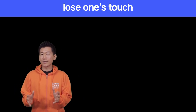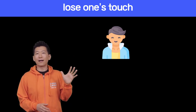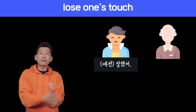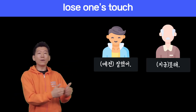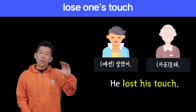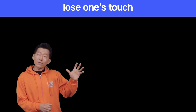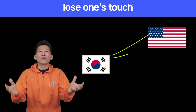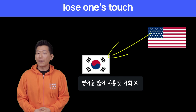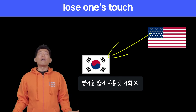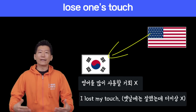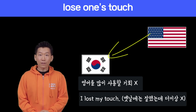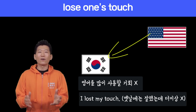이 표현은 이렇게 생각하시면 돼요 — 예전에는 정말 제가 아주 잘했어요. 근데 지금은 그것을 못하는 거예요. 뭐 한동안 practice를 못했겠죠? 미국에서 공부하다가 한국에 돌아왔으면, 영어를 사용할 기회가 많이 없잖아요. 그러면 여러분들은 이렇게 말할 수 있겠죠? 'I've lost my touch.' 영어 실력이 많이 떨어졌으니까.